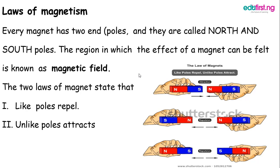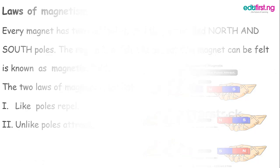The two laws of magnets state that: one, like poles repel; and two, unlike poles attract. This can be seen in the pictures.